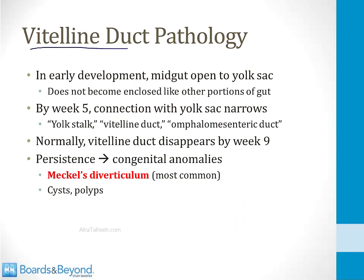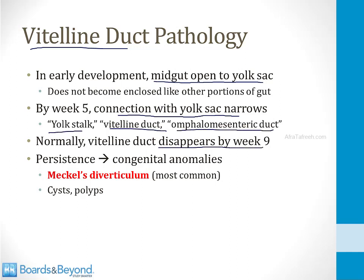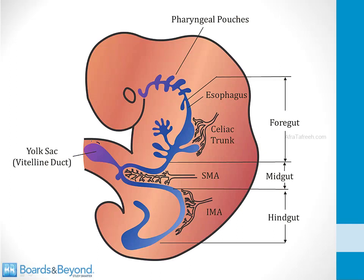The vitelline duct is a remnant of the yolk sac. Early in development the midgut retains its connection to the yolk sac, while the foregut and hindgut become enclosed tubes. By week 5 this connection narrows into the vitelline duct — also called the yolk stalk or omphalo-mesenteric duct — which normally disappears by week 9. If it persists, several congenital anomalies can develop, the most common being Meckel's diverticulum.